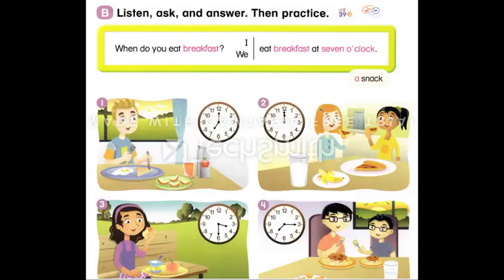Page 60, Section B — Listen, ask, and answer, then practice. When do you eat breakfast? I eat breakfast at 7 o'clock. When do you eat breakfast? We eat breakfast at 7 o'clock. 2. When do you eat lunch? We eat lunch at 12 o'clock. 3. When do you eat a snack? I eat a snack at 3:30. 4. When do you eat dinner? We eat dinner at 7:15.